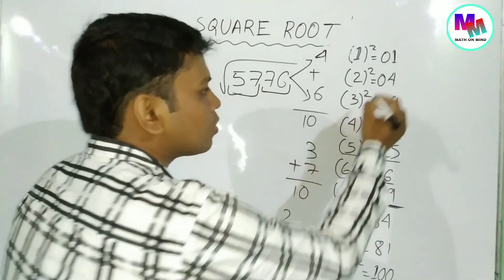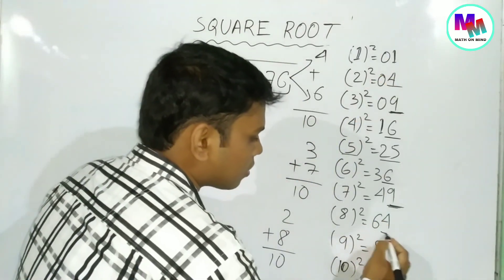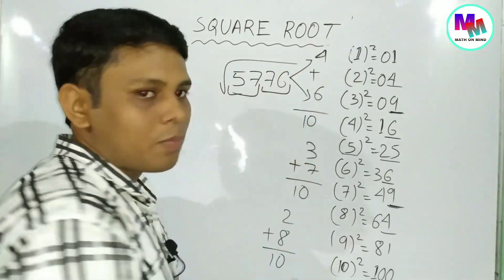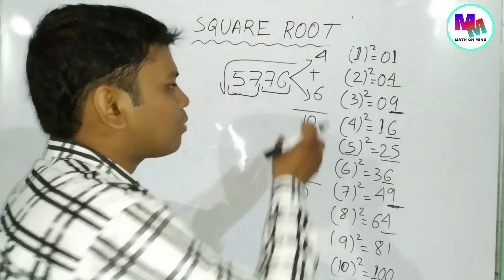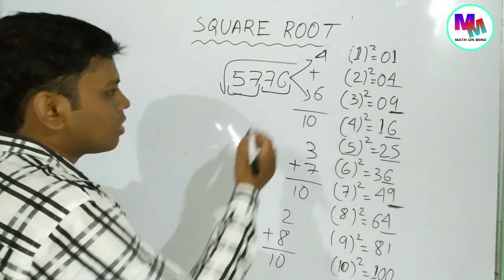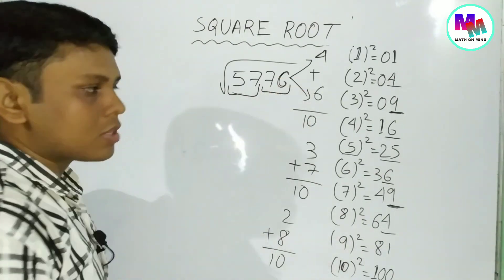We need to find which number squared gives us this. Looking at the chart, we can see the squares. We'll drop down and find it. The square root we're looking for.